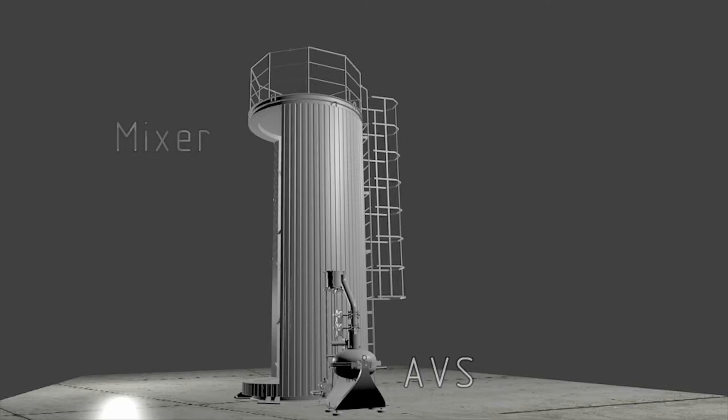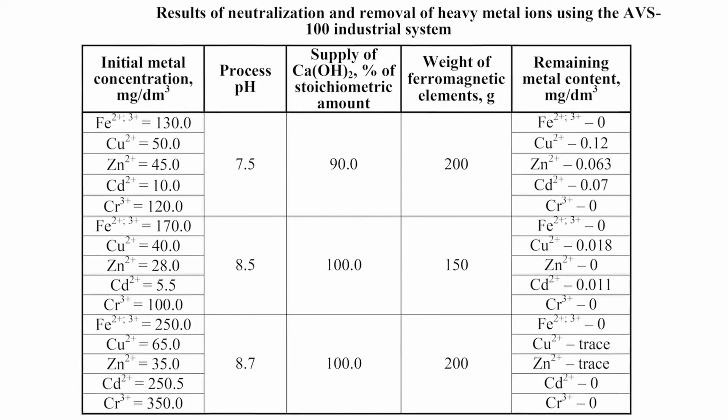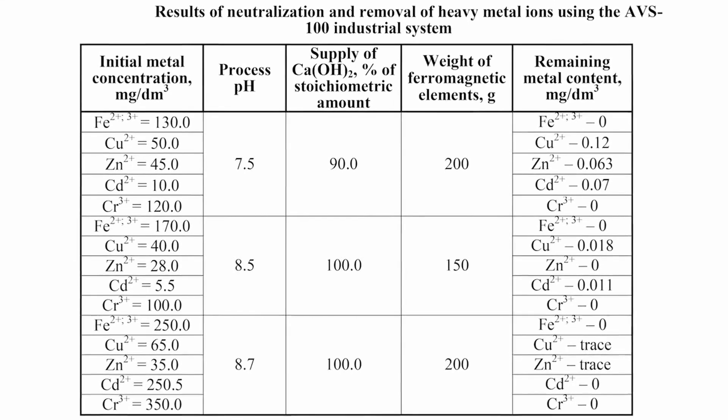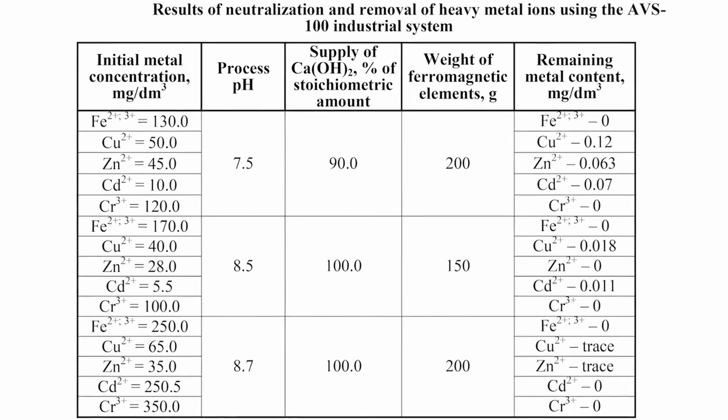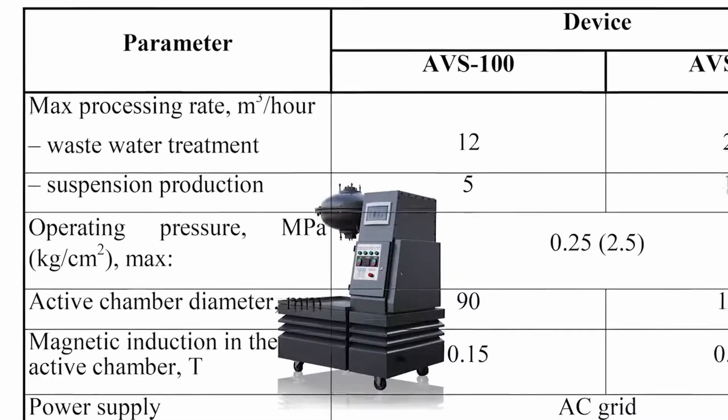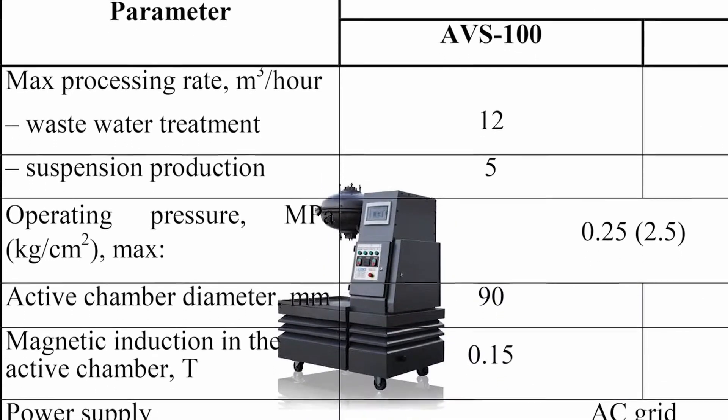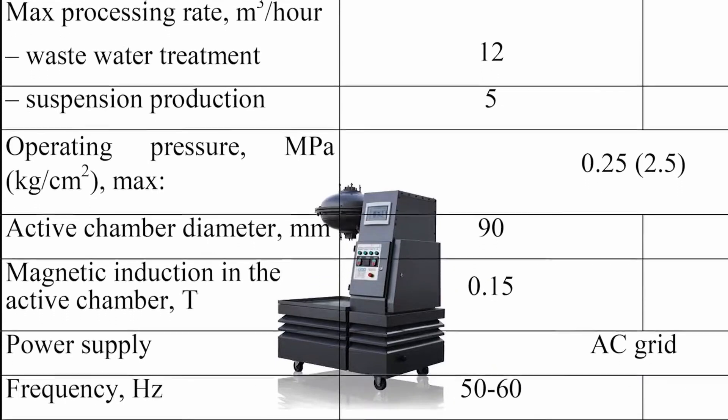Specifications of electromagnetic vortex layer devices. Characteristics of AVS-100 device: the maximum capacity during wastewater treatment is 12 cubic meters per hour; when obtaining the suspension, it equals 5 cubic meters per hour; maximum operating pressure in the chamber, 2.5 megapascal; rotation speed of magnetic field, 3000 revolutions per minute; power consumption, 4.5 kilowatts per hour.